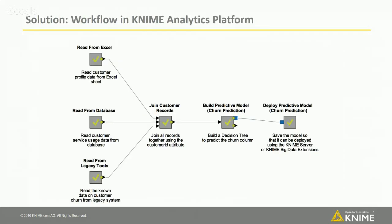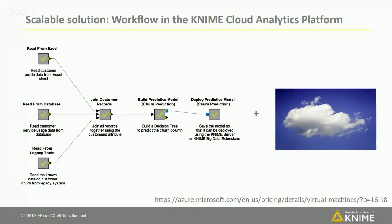Today I'm going to focus on two things: first, the benefits of using the KNIME cloud analytics platform, and second, the advanced analytics use case of churn prediction. I'll start by showing the solution we're going to build — reading data from Excel, from a database, and from legacy tools, then joining all those customer records together. From there I'll build the churn prediction model and finally deploy it. The scalable solution is to run this workflow on the KNIME cloud analytics platform with much more compute power.